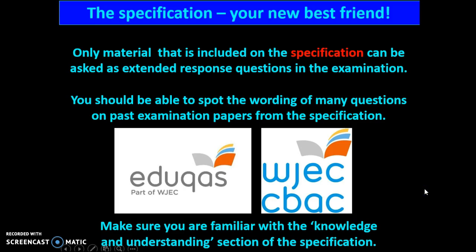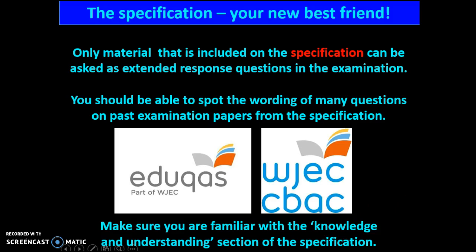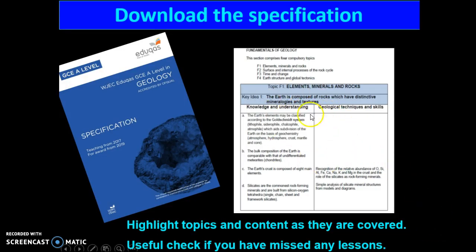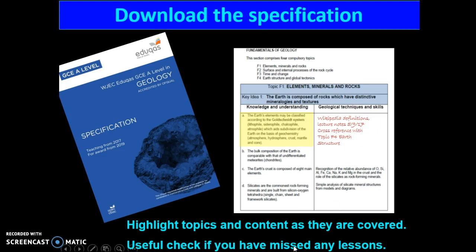The specification — I've talked about this before — will obviously give you bits from it, but it is your best friend. Once you start to look at exam questions, you'll see that a lot of the wording has come directly from the specification. There's a section called the knowledge and understanding section of the specification, which is really your learning objectives for what you need to know. If you highlight each topic and add information about what you've actually covered — class notes and so on — and where it cross-references, it will help you revise. It's also a useful check if you've missed any lessons, so you know what you need to capture from the textbook or from asking me.